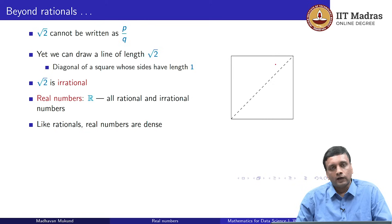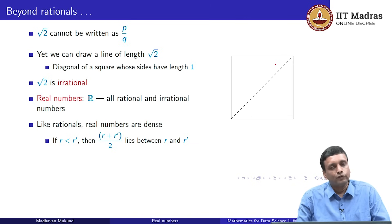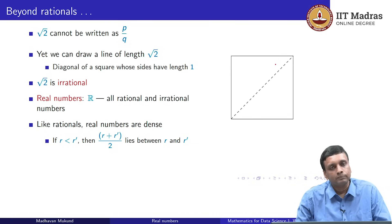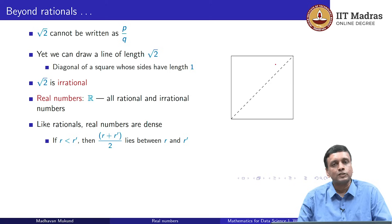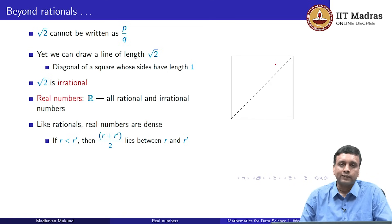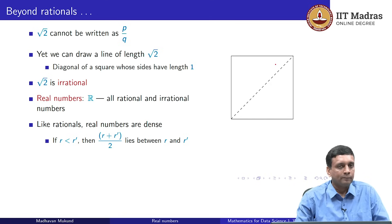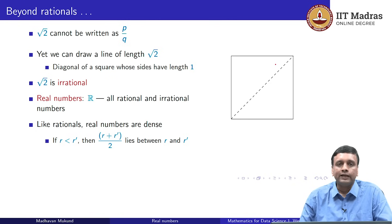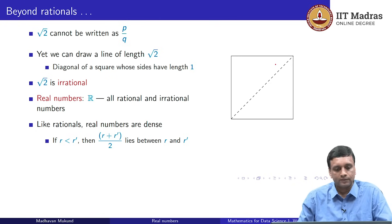It is not difficult to argue that like the rationals, the real numbers are also dense, for the very same reason. If you have two real numbers r and r′ such that r is smaller than r′, you can just take their average (r + r′)/2. This must be a number bigger than r and smaller than r′, so it lies between them. Therefore, between any two real numbers you will find another real number — the real numbers are dense.